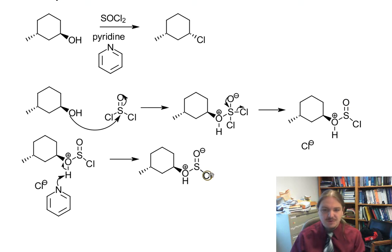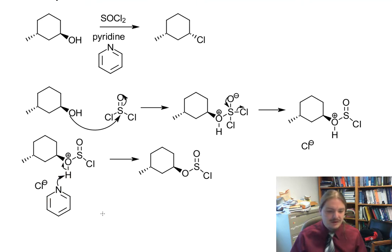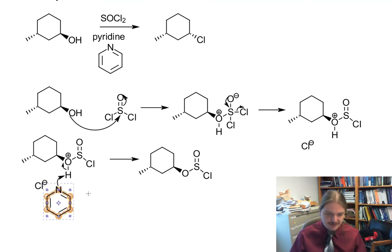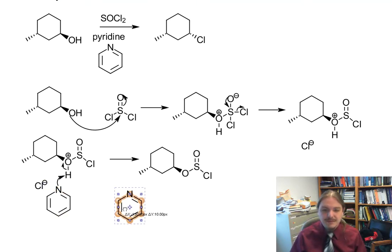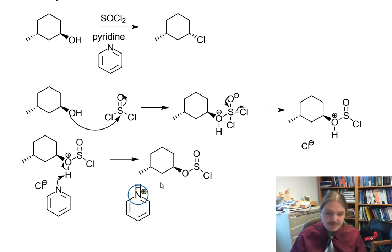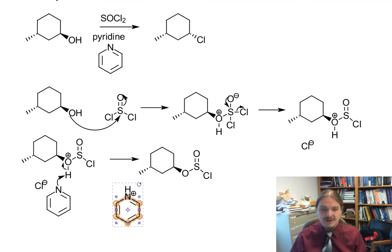Let's get rid of any leftover formal charges. We have protonated pyridine hanging out with this proton. One of the roles of pyridine is to capture any acid that might form, which could lead to other undesired consequences somewhere else in the reaction. And then we have our chloride anion.